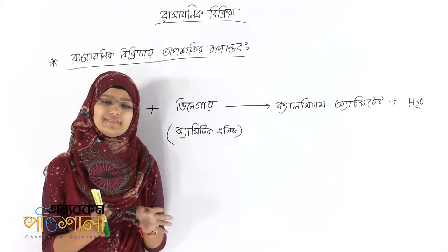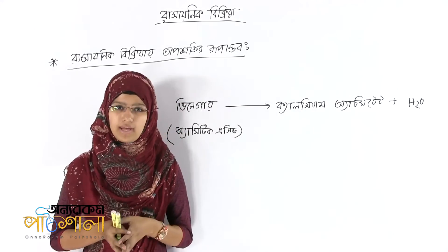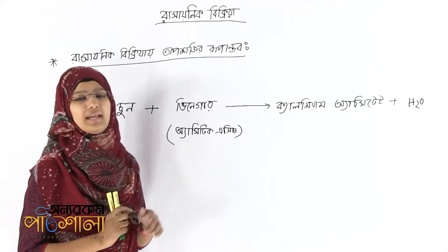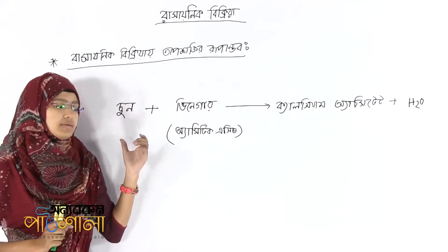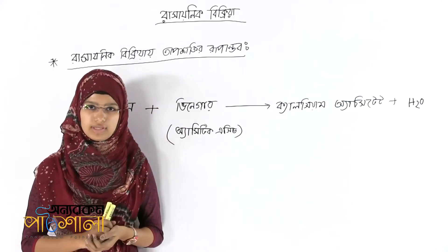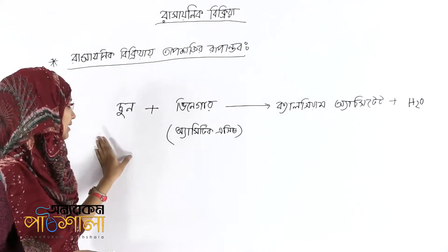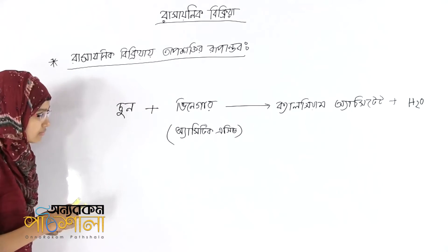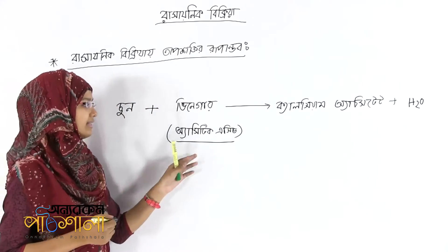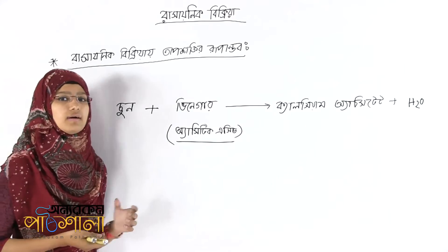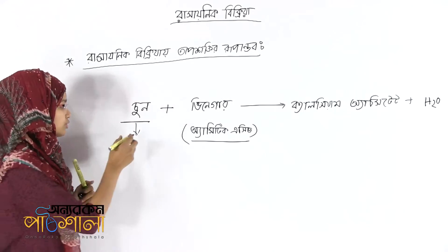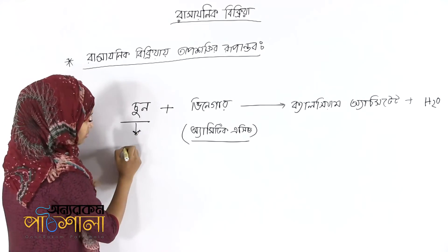બ'ઇ-'ઇ-'ઇ-'ઇ-'ઇ — 'ઇ'ઇ'ઇ: the product of the reaction (ઉ'ઇ-'ઇ-'ઇ) is acetic acid (એ-'ઇ-'ઇ-'ઇ). Acetic acid (એ'ઇ-'ઇ-'ઇ-'ઇ-'ઇ-'ઇ-'ઇ) — 'ઇ-'ઇ-'ઇ-'ઇ-'ઇ-'ઇ-'ઇ.